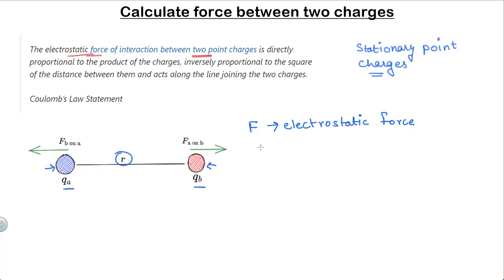According to Coulomb's law, this force F is directly proportional to the product of the charges, that is F is proportional to Qa times Qb, and F is inversely proportional to the square of the distance between these two charges, that is inversely proportional to R square. Combining these two relations, we get F equals K Qa Qb upon R square, where K is a constant of proportionality called the electrostatic force constant.